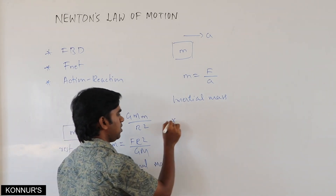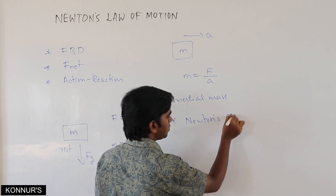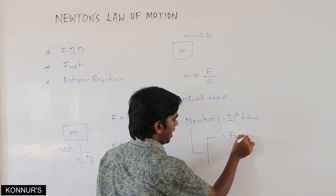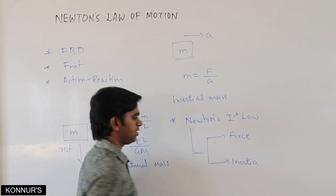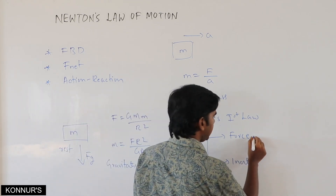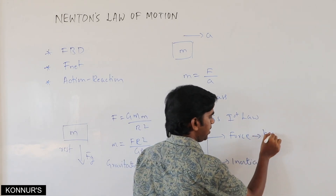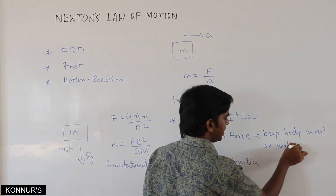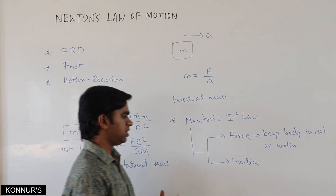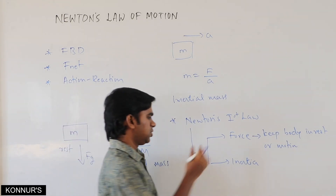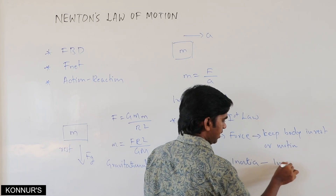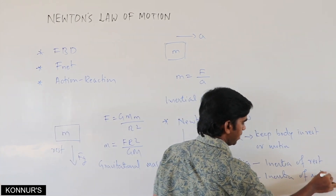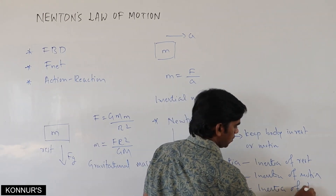Newton's first law is all about inertia. I divide this law into two parts: force and inertia. Force is an external agency that keeps a body either in rest or in motion. Inertia is the tendency of a body to be in its state. There are three types: inertia of rest, inertia of motion, and inertia of direction.